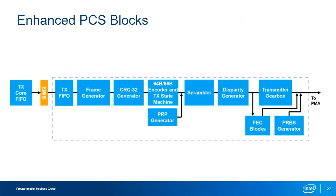To support protocols with higher data rates, the Enhanced PCS path is available in parallel to the Standard PCS, allowing selection of either or sometimes both. The blocks in the Enhanced PCS are the TX Core FIFO, the TX PCS FIFO, the frame generator, the CRC32 generator, the 64B-66B encoder, the PRP generator, the scrambler, the disparity generator, the transmitter gearbox, the forward error correction blocks, and the PRBS generator. Like the Standard PCS, blocks may be enabled and disabled as needed for the particular target protocol implementation.